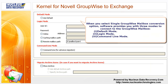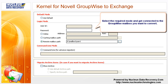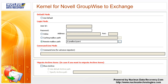When you select the Single GroupWise Mailbox Conversion option, the software provides you with three modes to connect to the GroupWise mailbox: Default Mode, Login Mode, and Command Line Mode. Select the required mode and get connected to the GroupWise mailbox you want to convert.